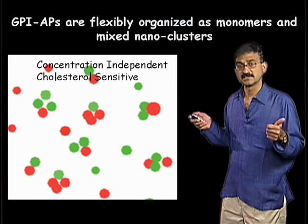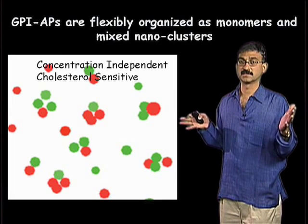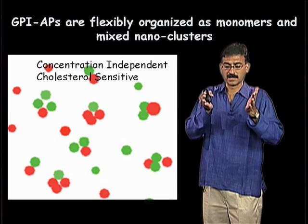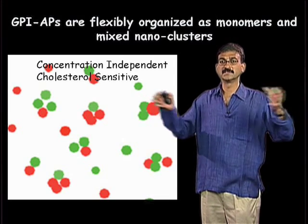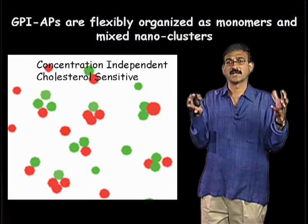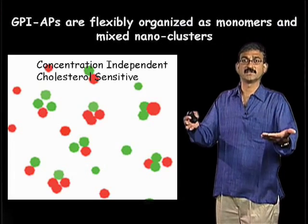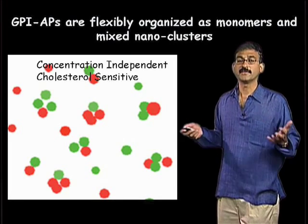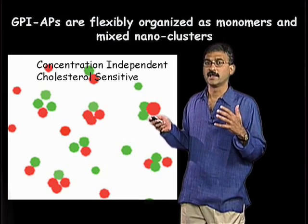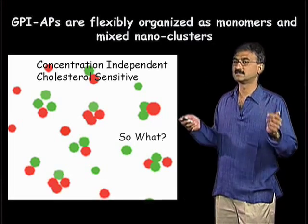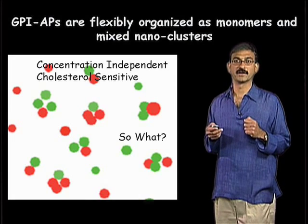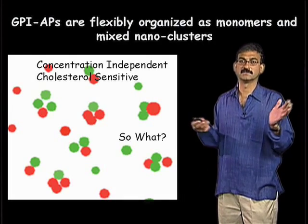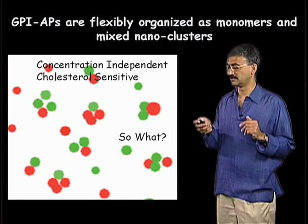They are concentration-independent — a very important property: if you look at different concentrations of GPI-anchored proteins in cell membranes, the fraction of clusters present is independent of their concentration. They are also cholesterol-sensitive. Given these properties, people not interested in GPI-anchored proteins might say: maybe this is just something special about GPI-anchored proteins. So I'd like to show experiments done on other lipid-anchored molecules.